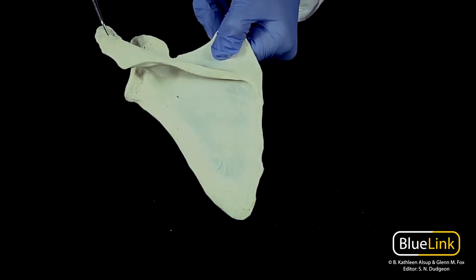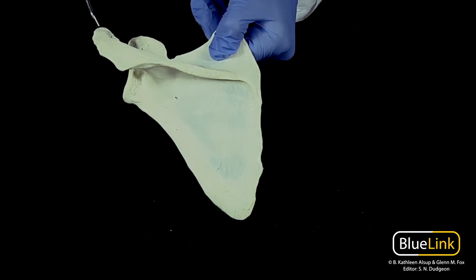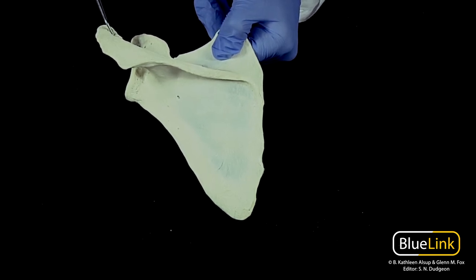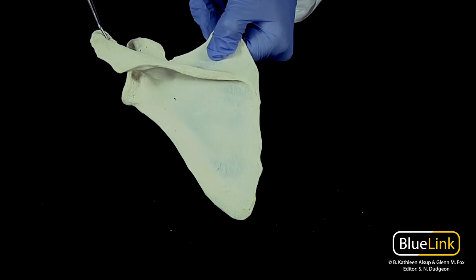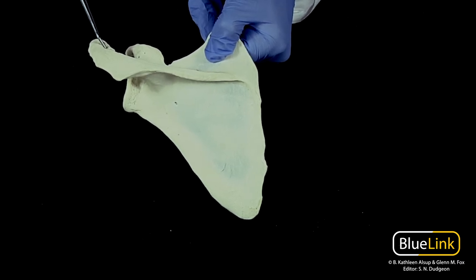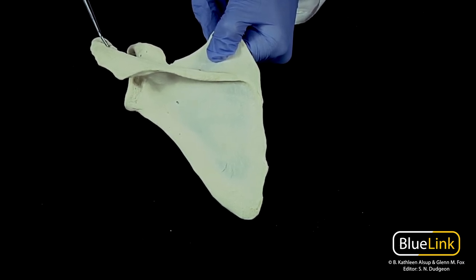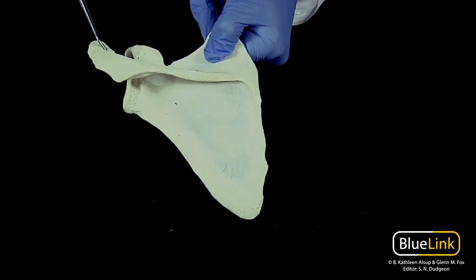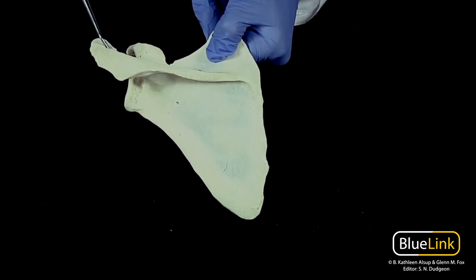The acromion is going to be laterally projecting. Oftentimes you'll hear this referred to as the point of the shoulder. This is going to articulate with the clavicle at the acromioclavicular joint. So very important in terms of shoulder separation.